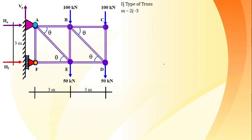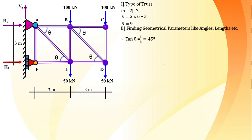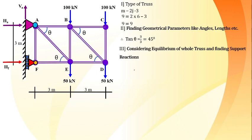Checking the type of truss: number of members = 9, number of joints = 6. Applying m = 2j - 3 gives 9 = 9, confirming it is a perfect truss. Next, we find the geometrical parameters. Since tan(θ) = 3/3 = 1, θ = 45 degrees.